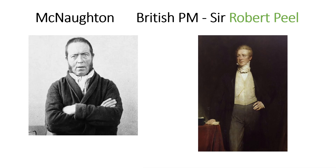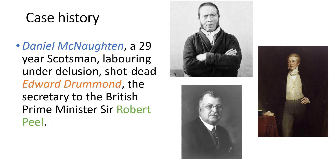In this photograph we can see McNaughton on the left side — he was the criminal in this particular case — and Sir Robert Peel was the then British Prime Minister, around 1840. Daniel McNaughton was a 29-year-old Scotsman suffering from schizophrenia. He had the delusion that the British Prime Minister was after him and had engaged men against him. McNaughton shot dead Edward Drummond, who was the secretary to the British Prime Minister.